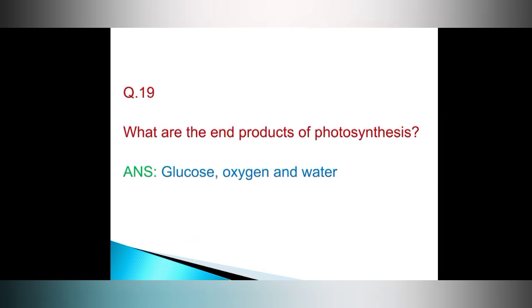Question number 19. What are the end products of photosynthesis? Answer. Glucose, oxygen and water.